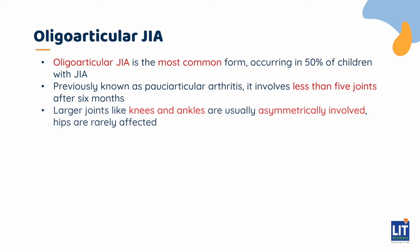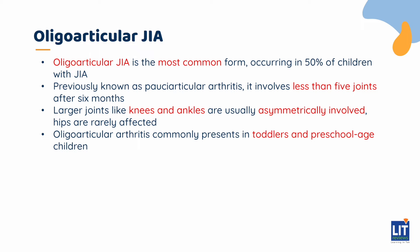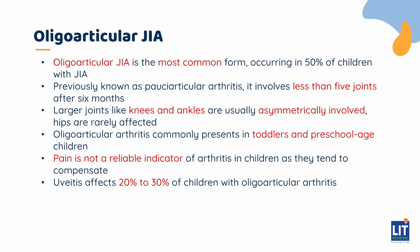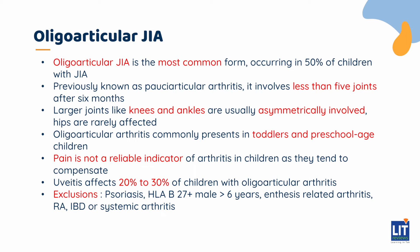Oligoarticular JIA, previously referred to as pauciarticular arthritis, involves less than 5 joints after 6 months. Usually larger joints such as knees and ankles are asymmetrically involved, and it is rare for the hips to be involved. It usually presents in toddlers and preschool-age kids. A typical presentation is a parent reporting that their 2-year-old, who was previously walking well, one day woke up and had a gait change, with swelling, yet the child remains active and rarely complains of pain. Pain is not a reliable indicator of arthritis in children. Uveitis affects 20–30% of children with oligoarticular arthritis.